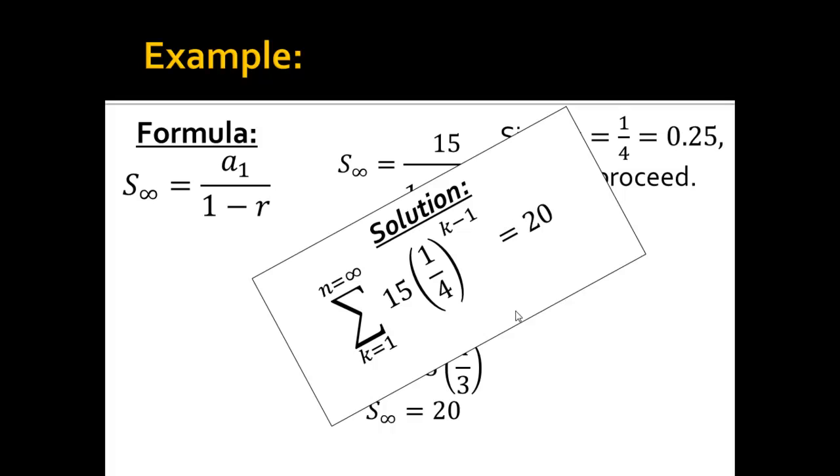So the infinite series of the sequence derived by 15 times 1 fourth to the k minus 1, starting from the first term and ending with the infinityth, would be 20. That's where the sequence would converge. We would say the sequence converges at 20. I'm sorry, the series converges at 20.